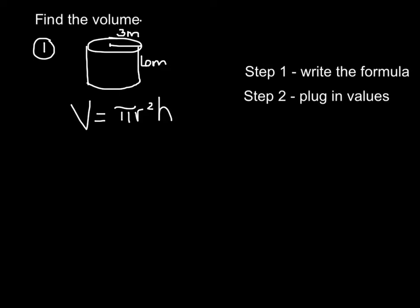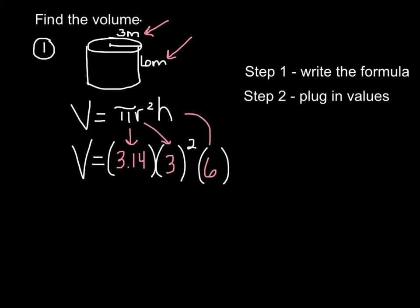Step two, plug in the values. So in number one, we notice that we have a radius of three and a height of six. So a radius of three. So we know pi. Pi is 3.14. The radius is 3.14. So then it would be 3.14 squared times the height. And the height is 6. That's it. There's not much to this. Pi, you plug in 3.14. The radius is 3. The height is 6.